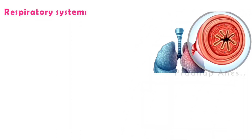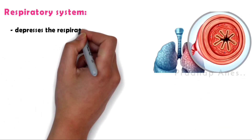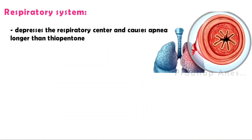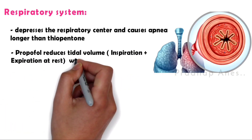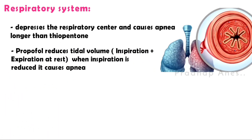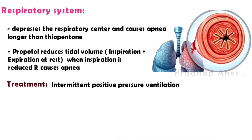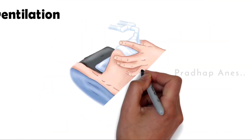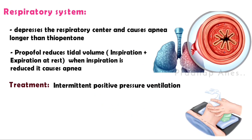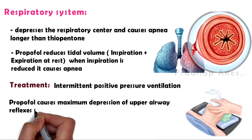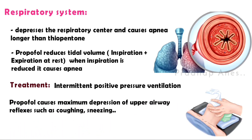Respiratory system: Propofol depresses the respiratory center and causes apnea longer than thiopentone. It reduces tidal volume when inspiration is reduced, causing apnea. Treatment is intermittent positive pressure ventilation with bag and mask. Propofol causes maximum depression of upper airway reflexes such as coughing and sneezing, making it the drug of choice for LMA intubation.